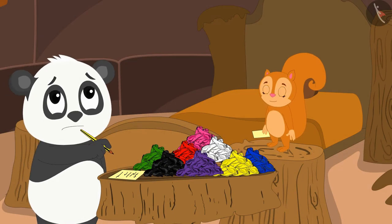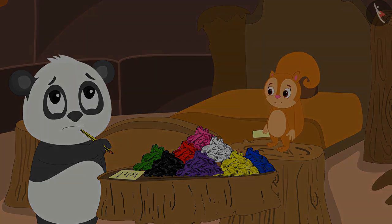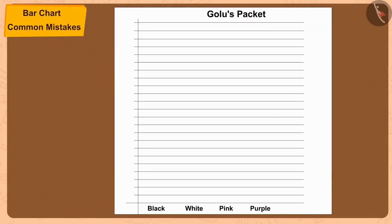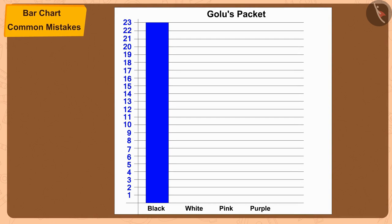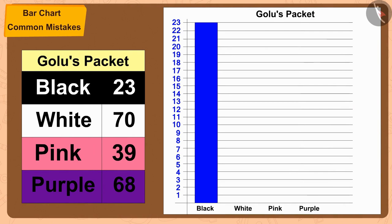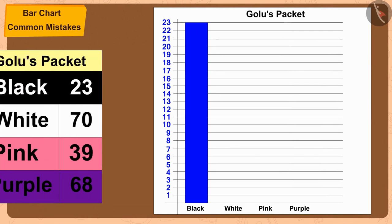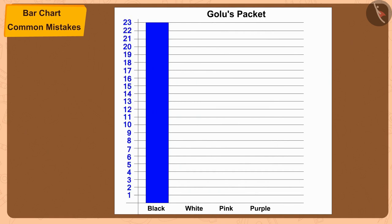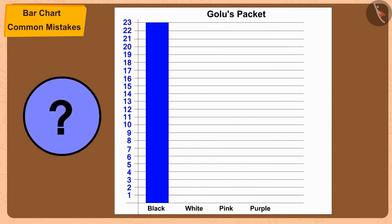What happened, Gulu? What are you thinking? I have made half the bar chart, but the number of these white balloons is 70. And on my paper, I can write numbers only up to 23 on this vertical line. Now, how do I show the number of these white balloons in this bar chart?